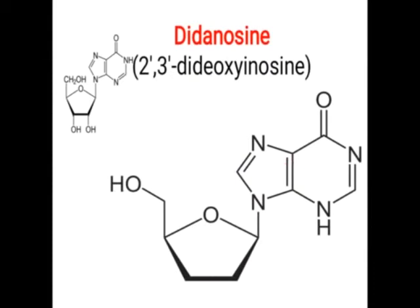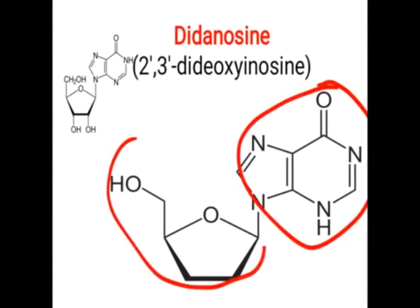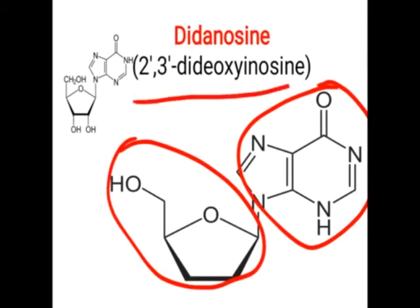The next drug is didanosine (ddI). This is the inosine part with sugar, but there is an absence of the hydroxy groups. It is called 2',3'-dideoxyinosine — devoid of two hydroxy groups. The structure of inosine normally has two hydroxy groups, and due to the absence of these two hydroxy groups it is called 2',3'-dideoxyinosine.